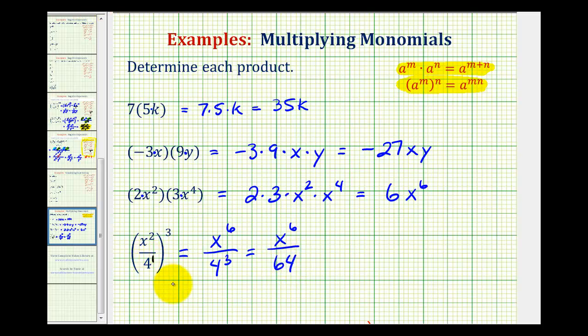And just to show the alternative here, we could have written out three factors of x to the second over four. That's what it means to have something raised to the third power. And then from here, looking at the numerator, x to the second times x to the second times x to the second would have given us x to the sixth. And four times four times four, of course, is equal to 64. So the result is the same, even though our approach was different.